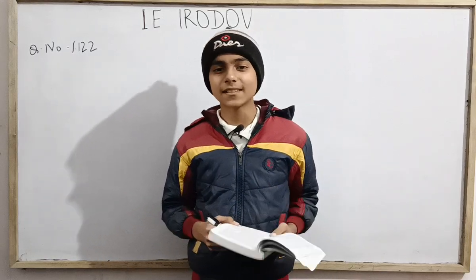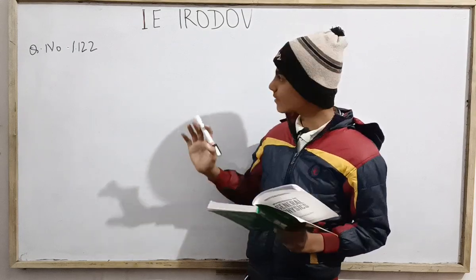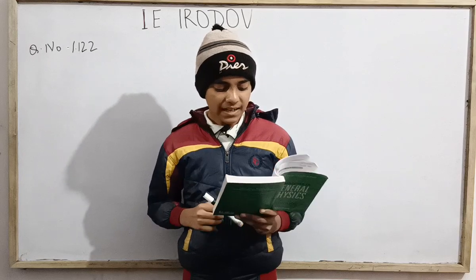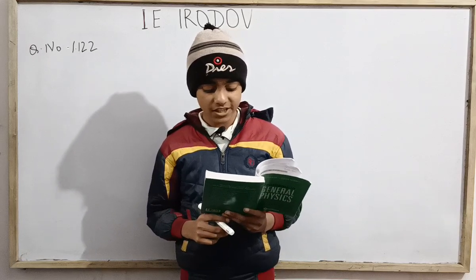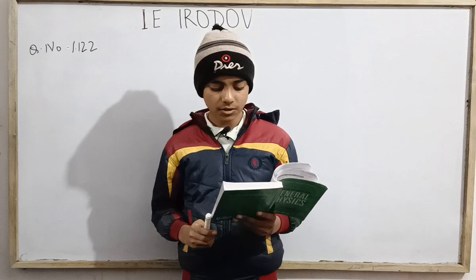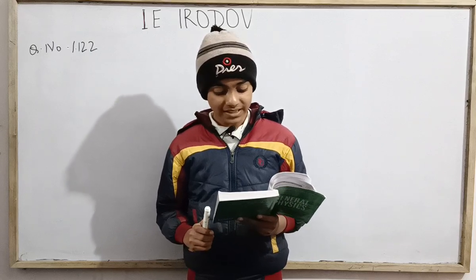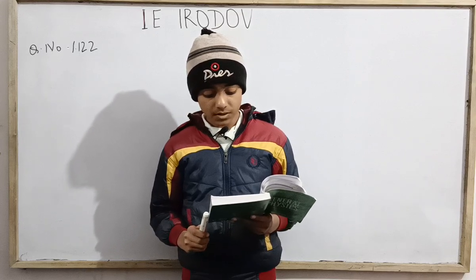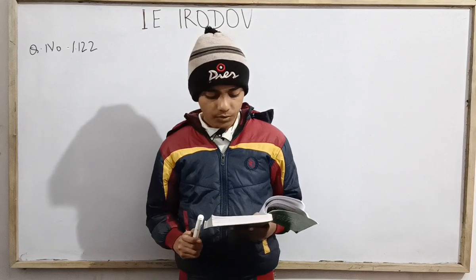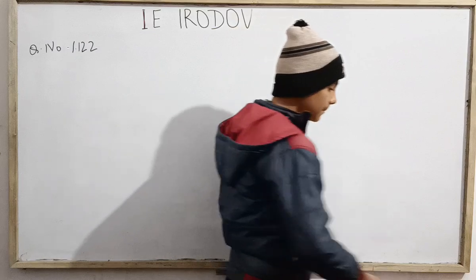Hello everybody and welcome back. We're back with another on-demand question on physics from IE Irodov, question number 1.122, on demand by JK Official. A disk of mass m = 50 grams slides with zero initial velocity down an inclined plane at angle alpha = 30 degrees to the horizontal. Having traversed distance l = 50 cm along the horizontal plane, the disk stops. Find the work performed by friction forces over the whole distance, with friction coefficient k = 0.15 for both inclined and horizontal planes.